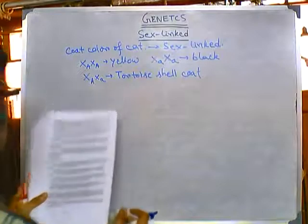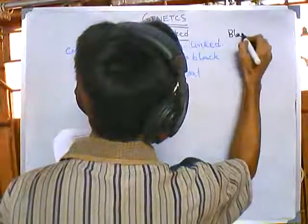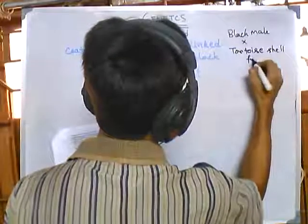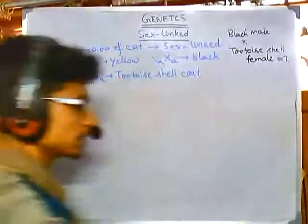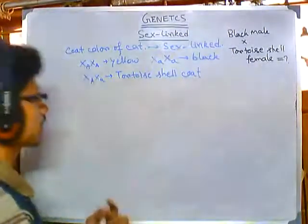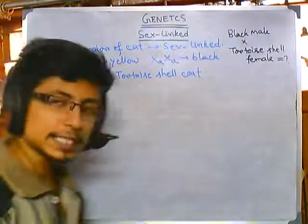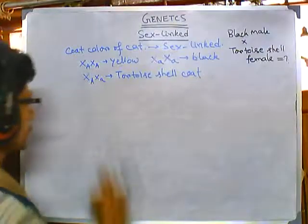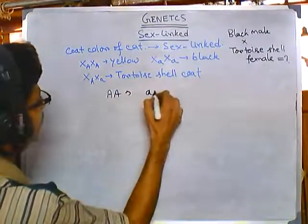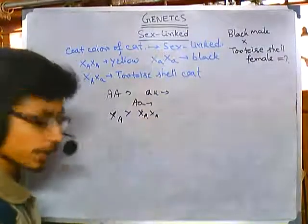We are asked to find what kind of offspring would result from a mating of a black male and a tortoiseshell female. They also ask whether it is possible to obtain a tortoiseshell male. In sex-linked inheritance, we can't just write homozygous or heterozygous — we have to write it with X and Y notation.